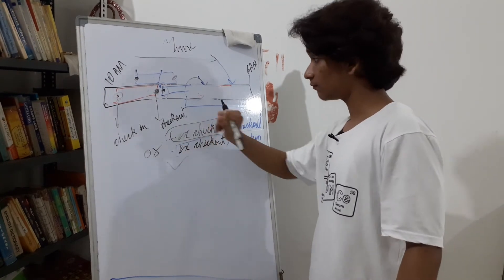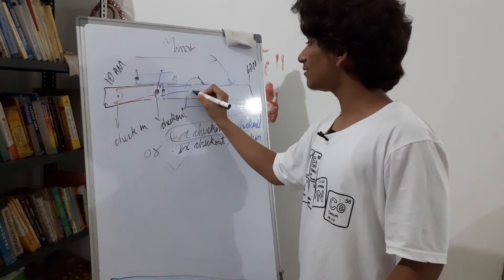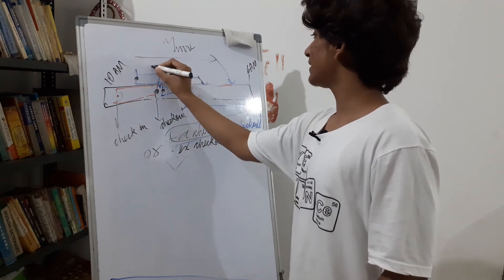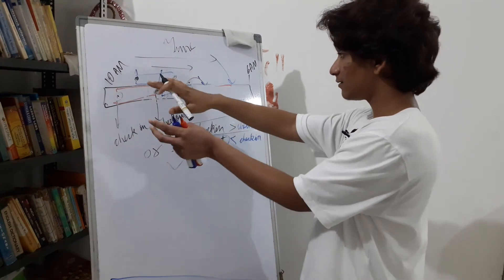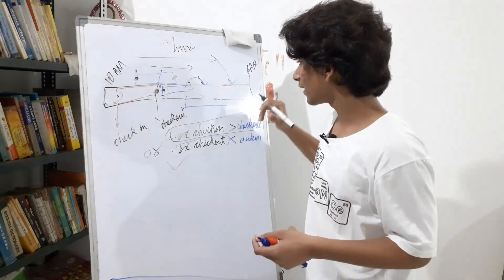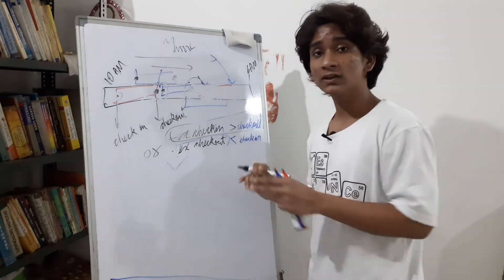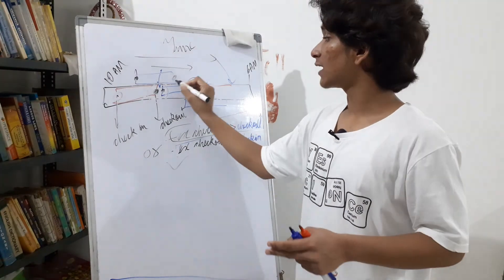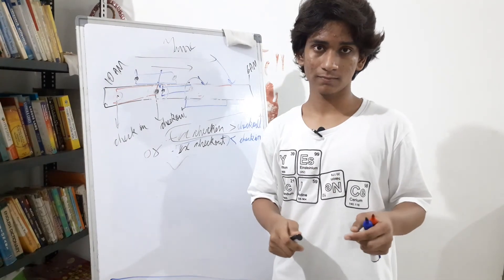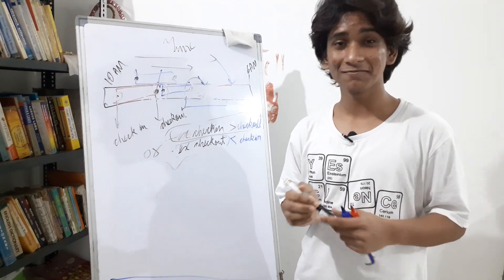Now check the first condition: is existing check-in > new check-out? No, it's clearly not — the existing check-in is to the right on the timeline, and anything in the future is greater than anything in the past. So if one condition satisfies, the other does not. But if either of the two conditions is true, the time slot is available.